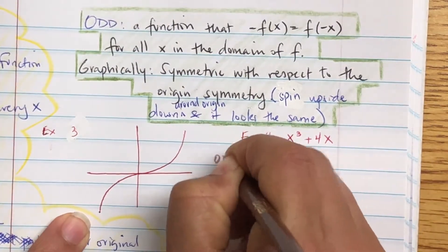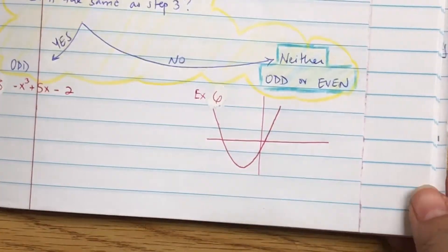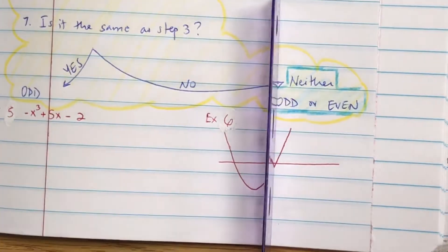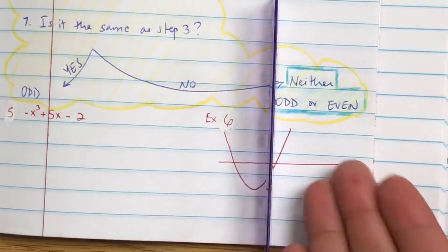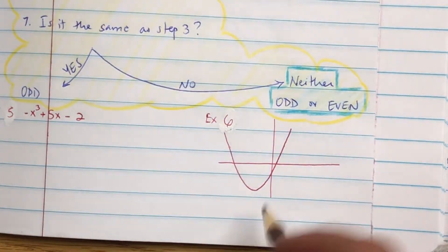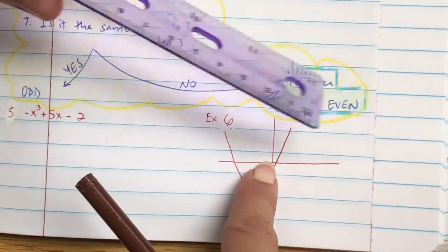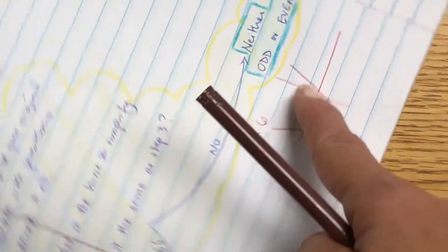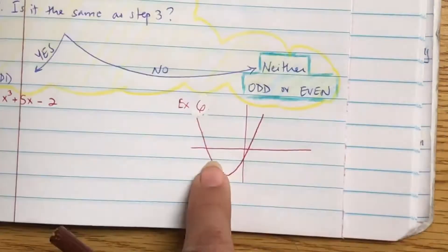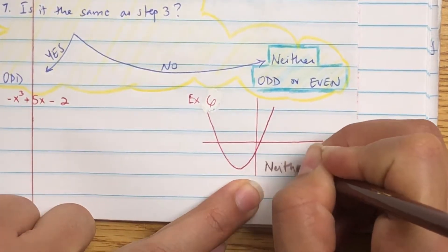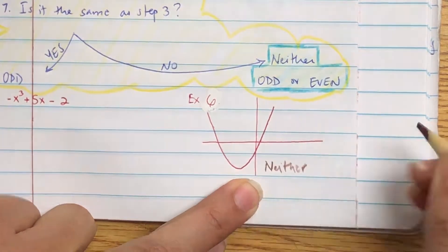Let's take a look at one more graph. Start with the y-axis — if I fold it, does it look the same? No. What about if I spin it? Looking at that top right part, does it look the same? No, the top right doesn't look the same. So this is neither even nor odd.